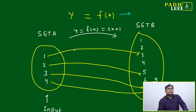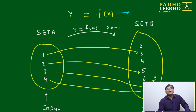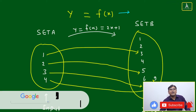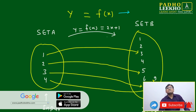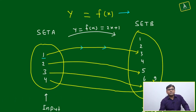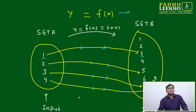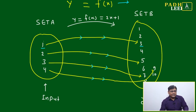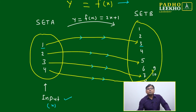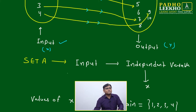Here we'll pick two sets, set A and set B. The function y = f(x) is defined as 2x + 1 — a straight line. If you put one input value of x, a certain output will come: x = 1 gives 3, x = 2 gives 5, x = 3 gives 7, and x = 4 gives 9. Set A contains the input elements — the values of x — and set B contains the output, the values of y.